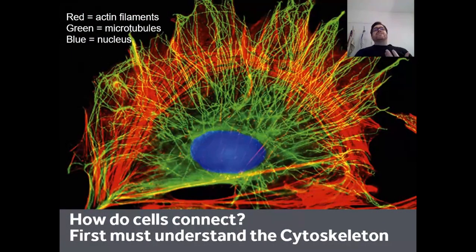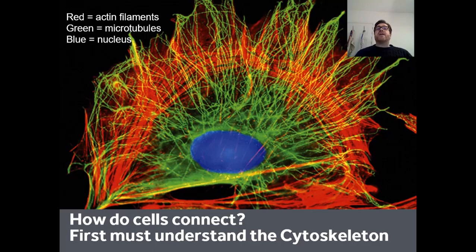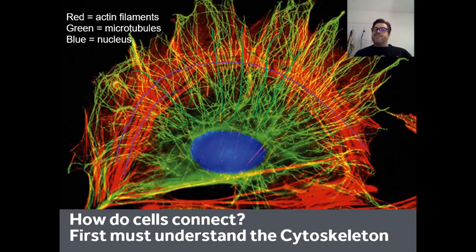In order to coordinate, cells have got to be able to connect. But first, if we're going to understand how cells connect to one another, we actually have to look inside the cells and understand the cytoskeleton. In this image, in the red we can see actin filaments, in the green we have the microtubule network radiating in a different direction, and in the blue we have the nucleus. There's a very clear internal structure to cells — we often think of cells as blobs containing organelles, but they have a skeleton: the cytoskeleton.